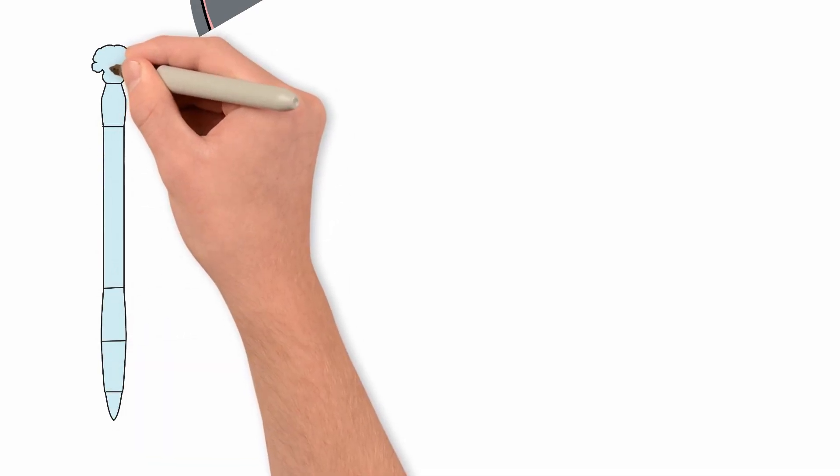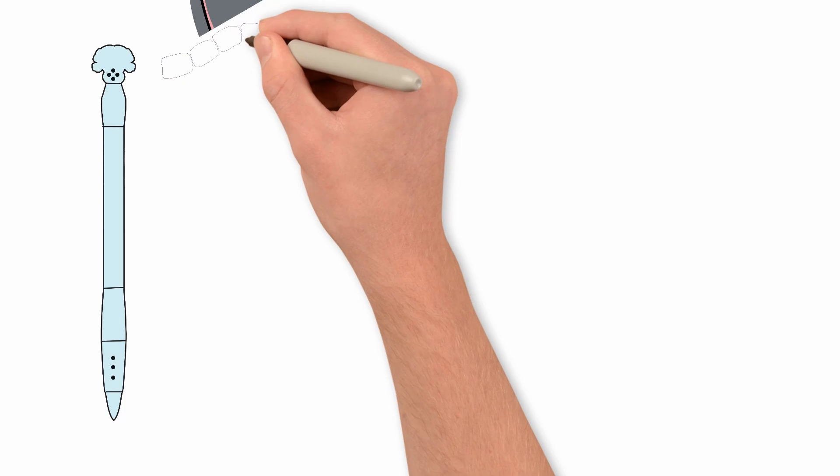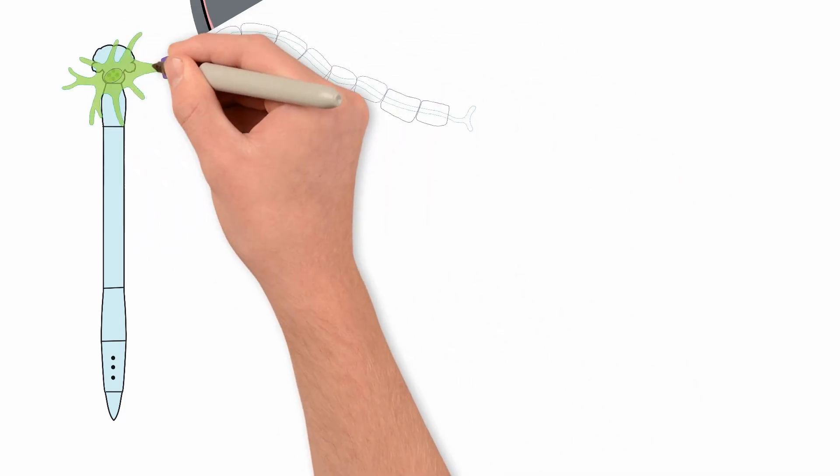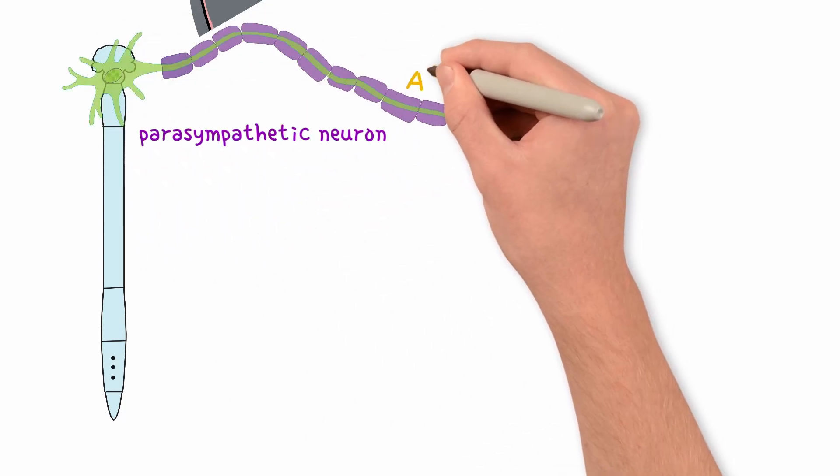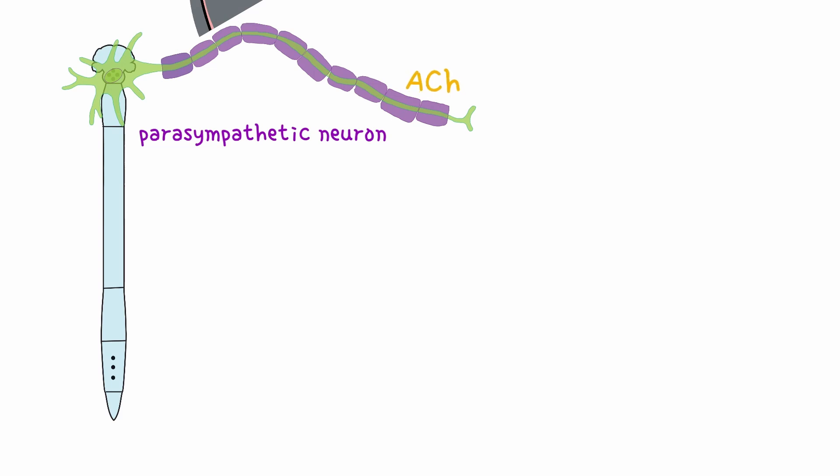Parasympathetic neurons originate from cranial nerves 3, 7, 9, and 10, and the sacral regions of the spinal cord segments S2 to S4. These long preganglionic neurons carry the neurotransmitter acetylcholine all the way from the central nervous system to the autonomic ganglia.